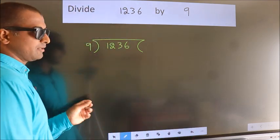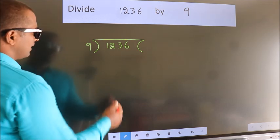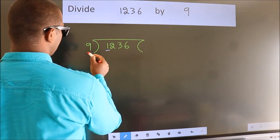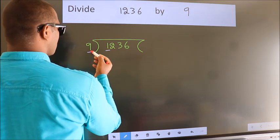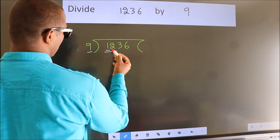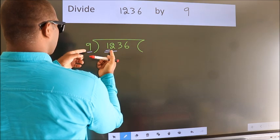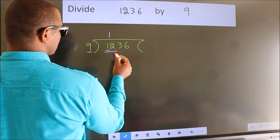This is your step 1. Next, here we have 1, here 9. 1 is smaller than 9, so we should take 2 numbers, 12. A number close to 12 in the 9 table is 9 once, which is 9.